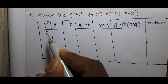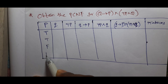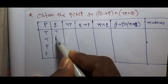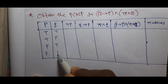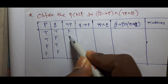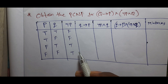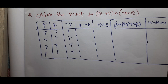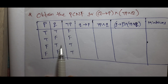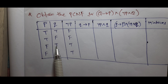The truth values are: true, true; true, false; false, true; false, false. Negation P is false, true, true. Q conditional P implies Q: true, false, true.